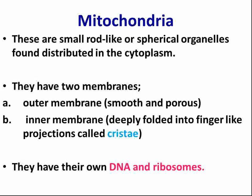The first cell organelle is called mitochondria. Mitochondria are small rod-like or spherical organelles found distributed inside the cytoplasm. Rod-like means elongated and spherical means circular in shape. These organelles are found distributed inside the cytoplasm, and the mitochondria have two membranes.